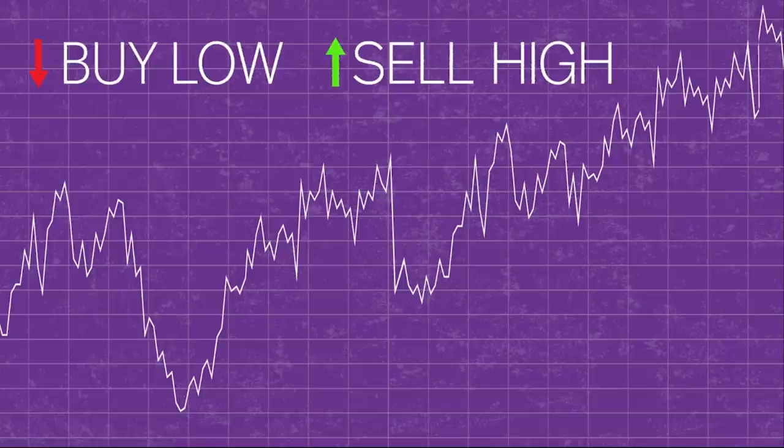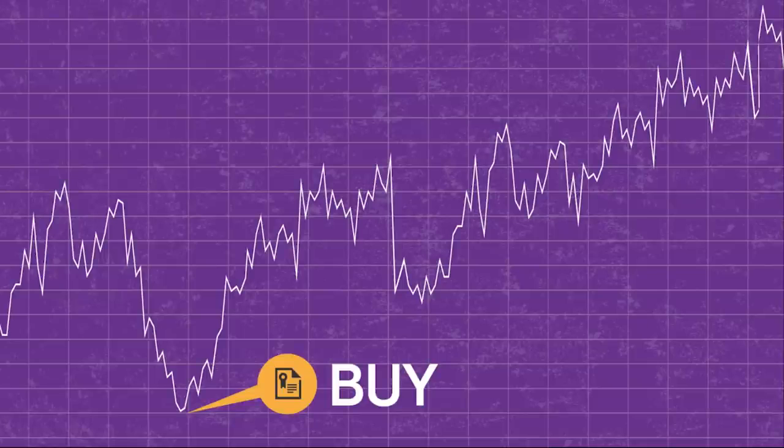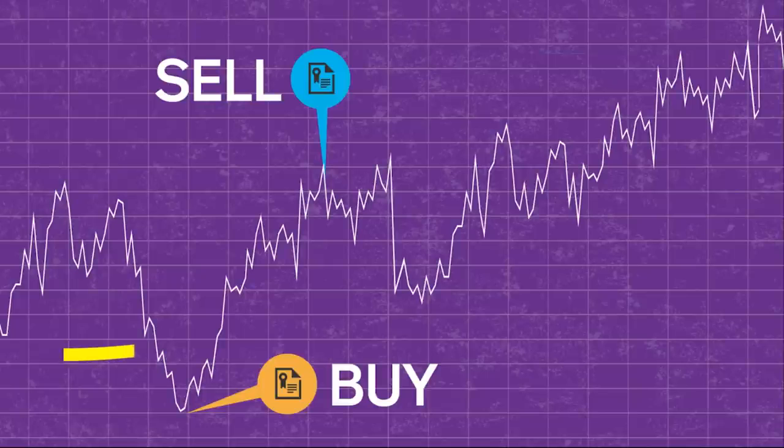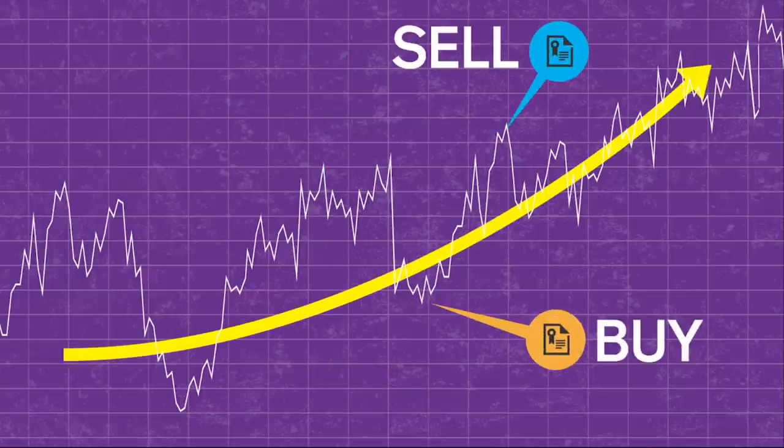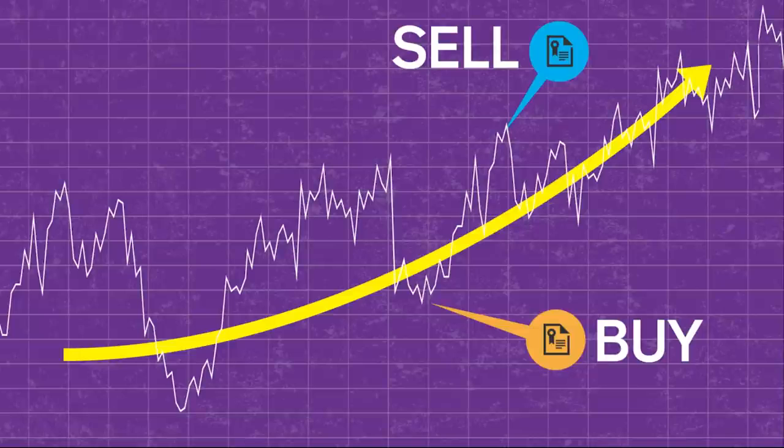They go up and down. The goal is to buy low and sell high. When one investment type is down, you want to buy. At the same time, you want to sell an investment that is high. In the long run, they all tend to move up, just at different rates based on risk.